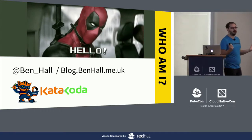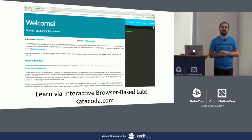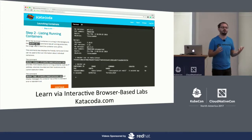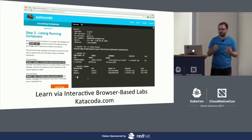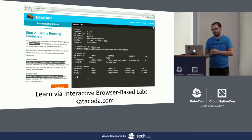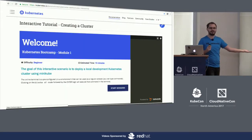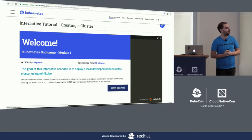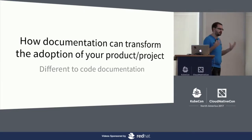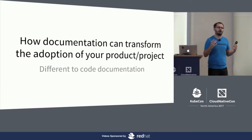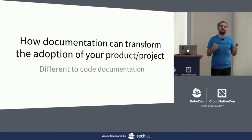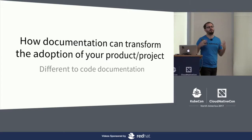My name is Ben Hall. I am the founder of Katacoda. Katacoda is an interactive learning platform for software developers. Directly in the browser you get given an interactive environment which has been pre-configured with all the various tooling — Docker, Kubernetes, OpenShift. And alongside that to guide you, you get a step-by-step tutorial so you can learn and follow along and solve real-world problems. You may have seen us on the Red Hat stand downstairs, which is using Katacoda, and the Kubernetes website has Katacoda embedded to help bootstrap and kickstart people's experience.